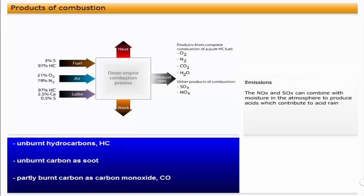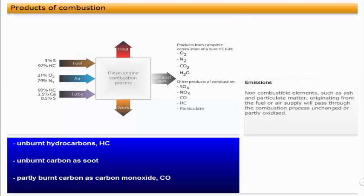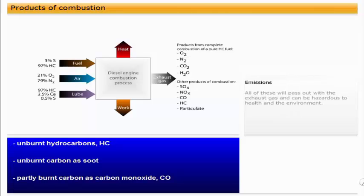The NOX and SOX can combine with moisture in the atmosphere to produce acids, which contribute to acid rain. Non-combustible elements, such as ash and particulate matter, originating from the fuel or air supply, will pass through the combustion process unchanged or partly oxidized. All of these will pass out with the exhaust gas and can be hazardous to health and the environment.